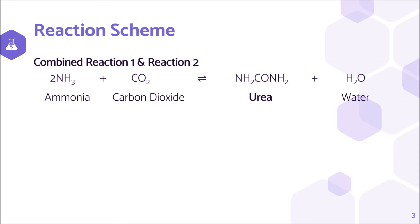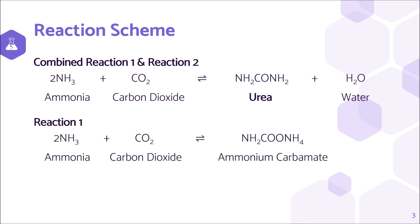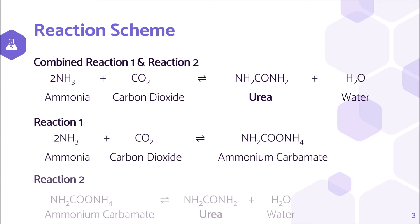The combined reaction shows that two moles of ammonia react with one mole of carbon dioxide to form one mole of urea product and one mole of water. The reaction is a reversible reaction. This reaction has two steps: the formation of ammonium carbamate, followed by dehydration of ammonium carbamate to form the urea product.